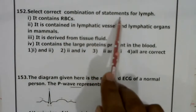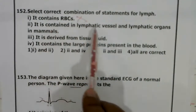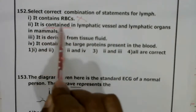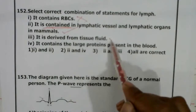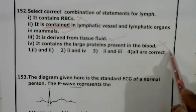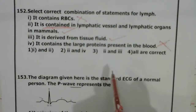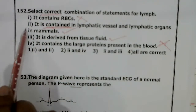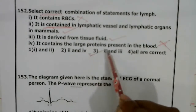Question 152: Select correct combination of statements for lymph. 'Lymph will not contain RBCs' — so the statement that it contains RBCs is incorrect. 'Lymph is contained in lymphatic vessels and lymphatic organs' — correct. 'It is derived from tissue fluid' — also correct. 'It contains large proteins present in blood' — no, large proteins from blood are not present in lymph. Correct answer: the second and third statements are correct.